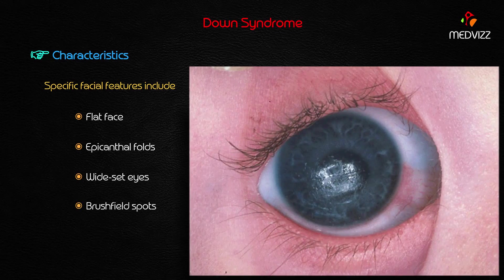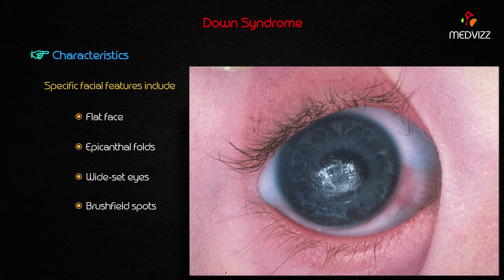Brushfield spots can also be identified — they are prominent in more than 50% of Down syndrome cases. These are white spots on the periphery of the iris. If a case mentions white spots on the iris periphery, those are Brushfield spots.